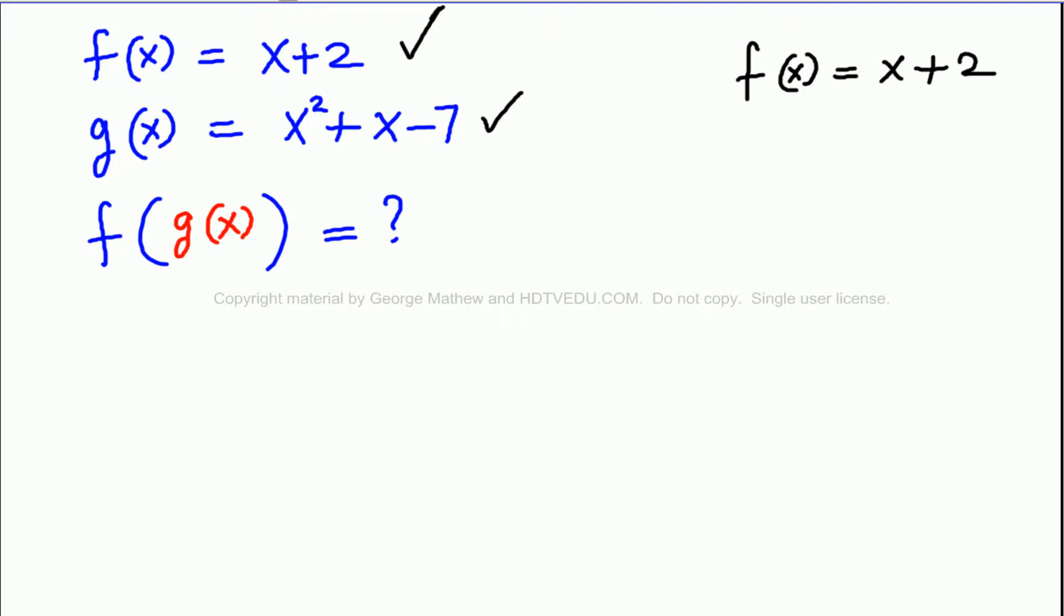When we write f of g of x, what we do is actually, in the space occupied by x, we substitute g of x. And what is g of x? x squared plus x minus 7.